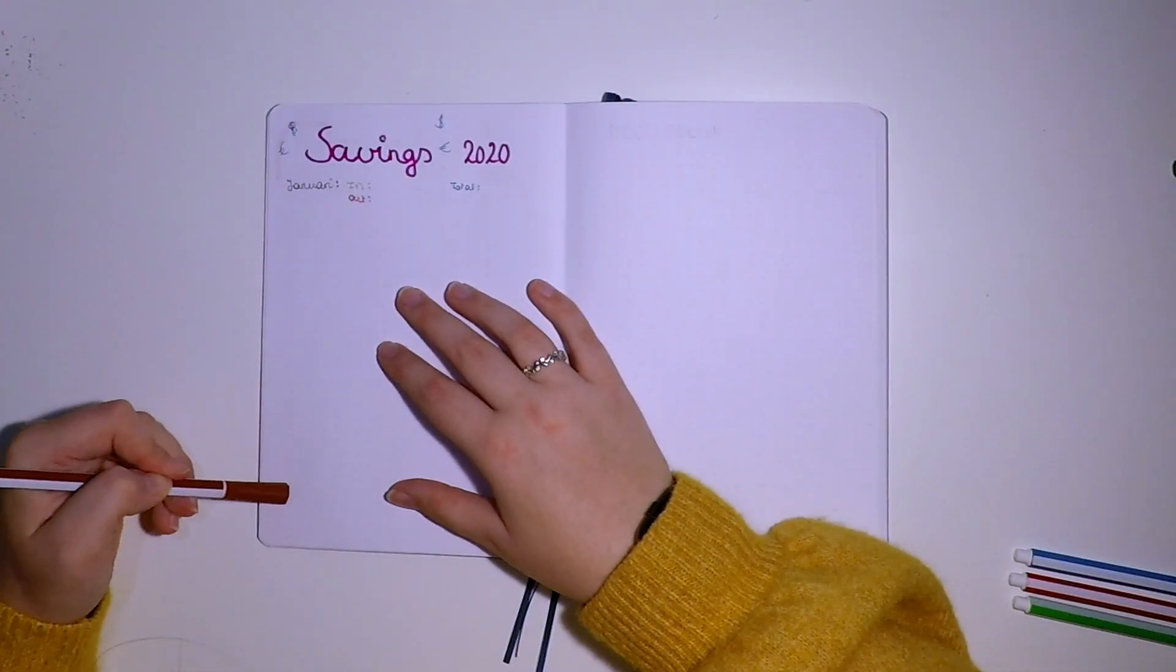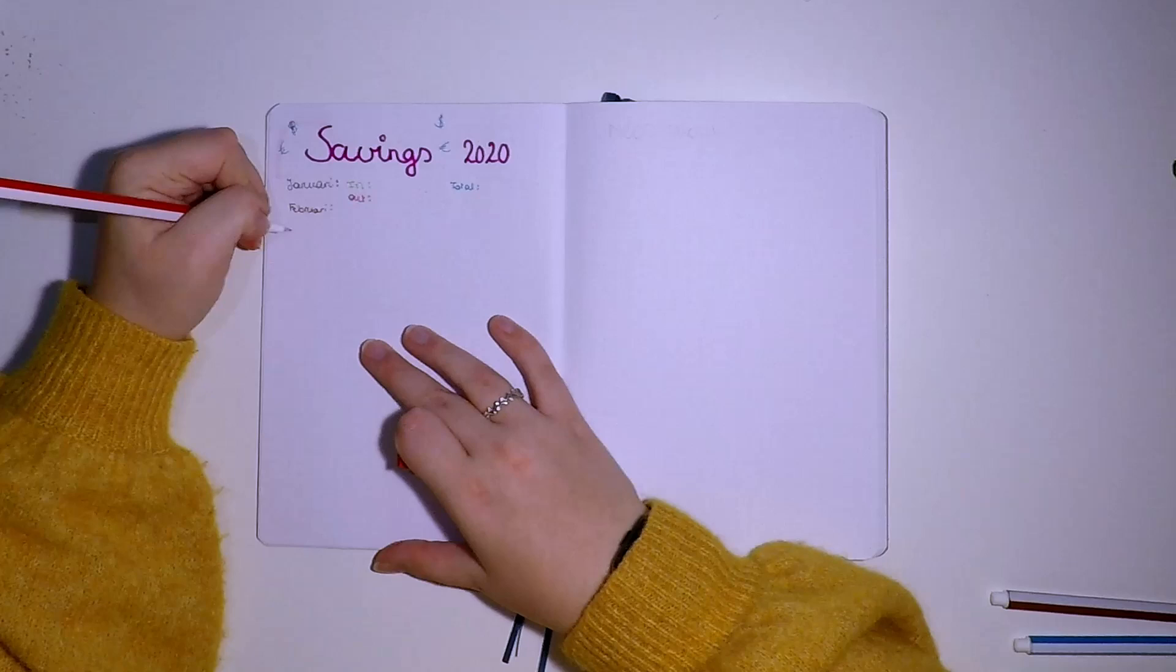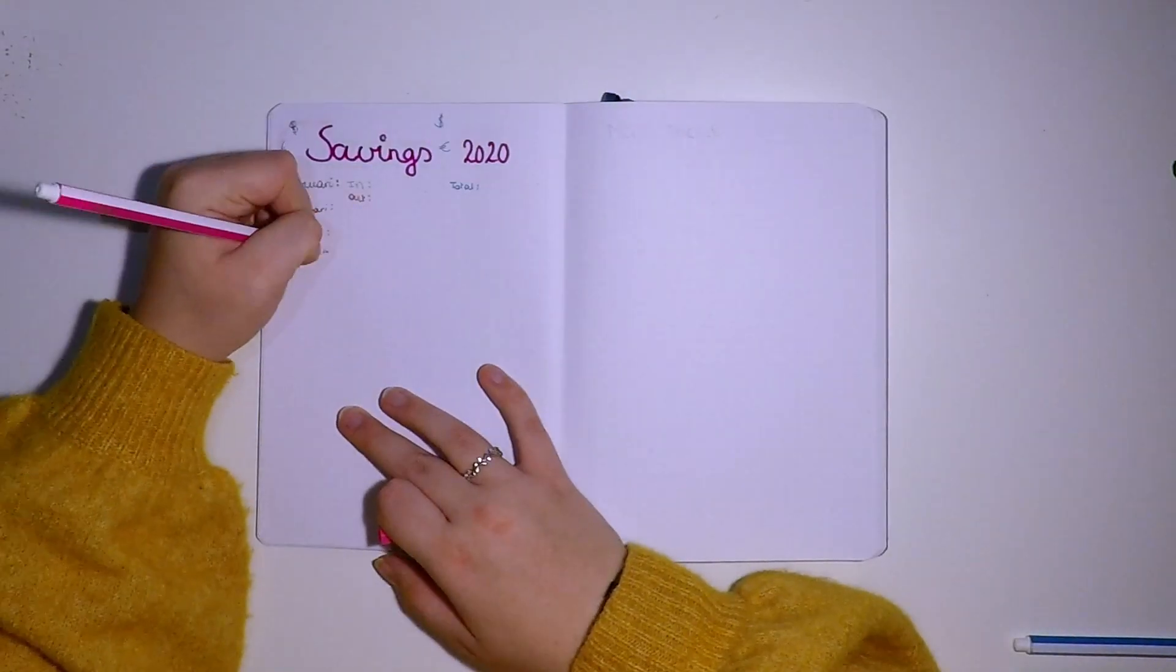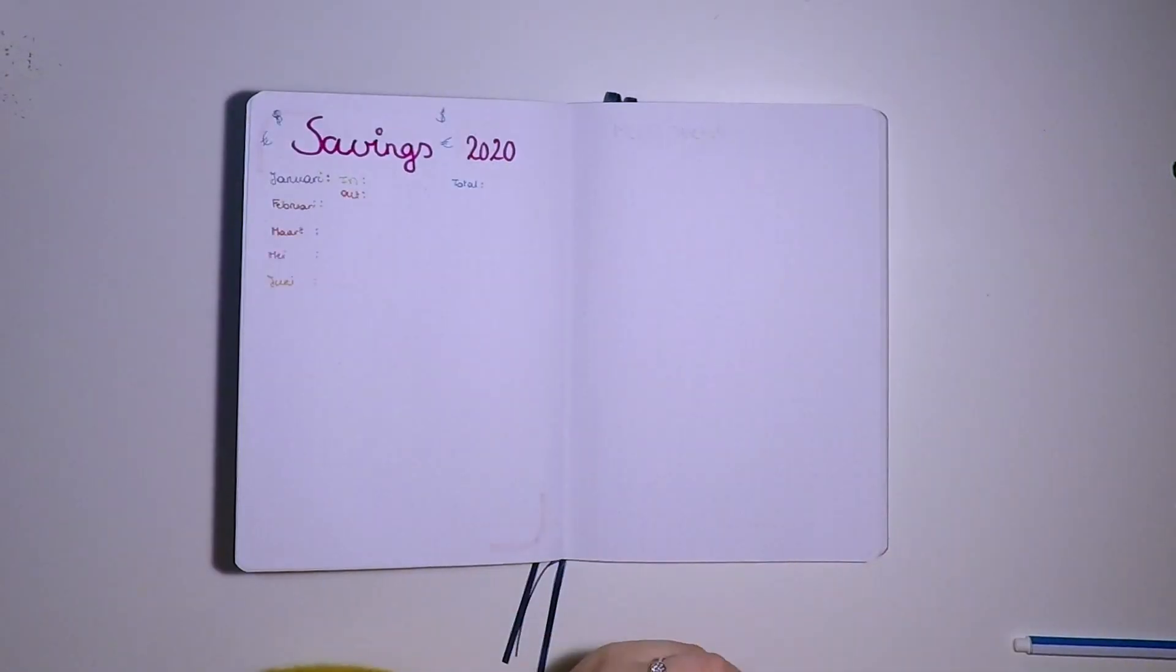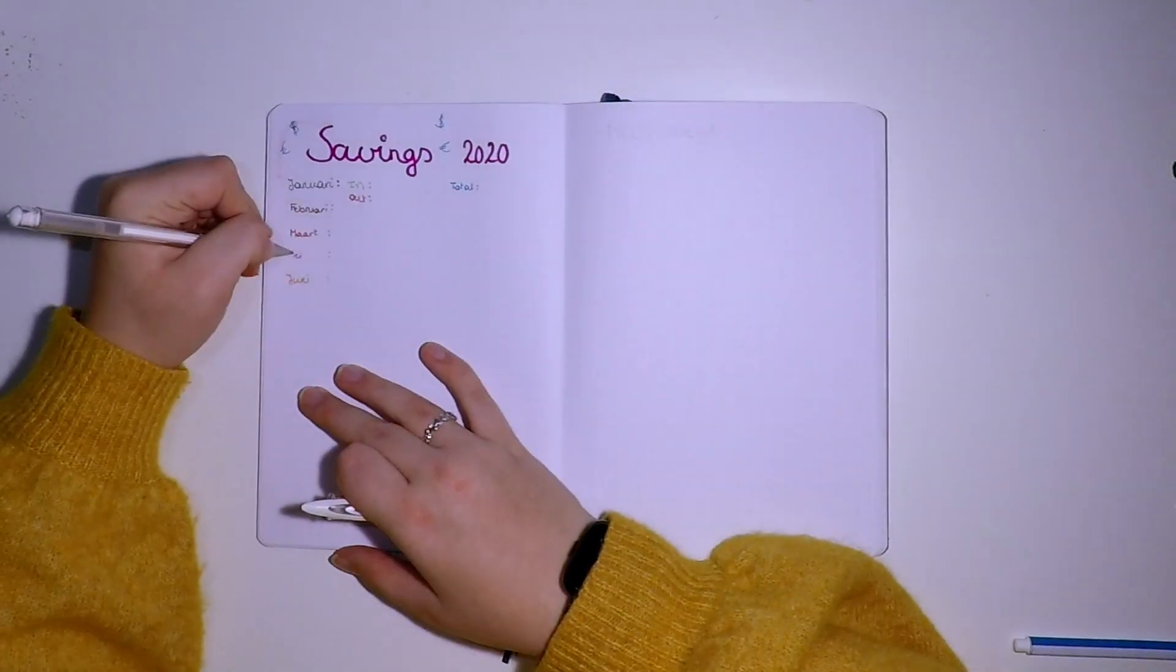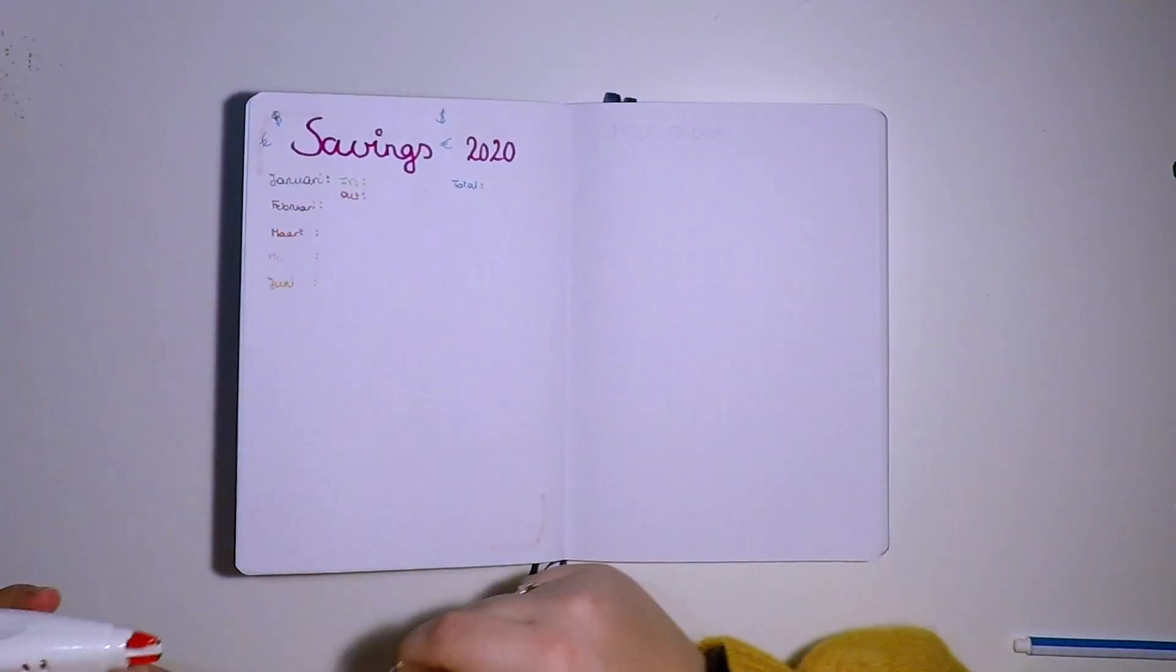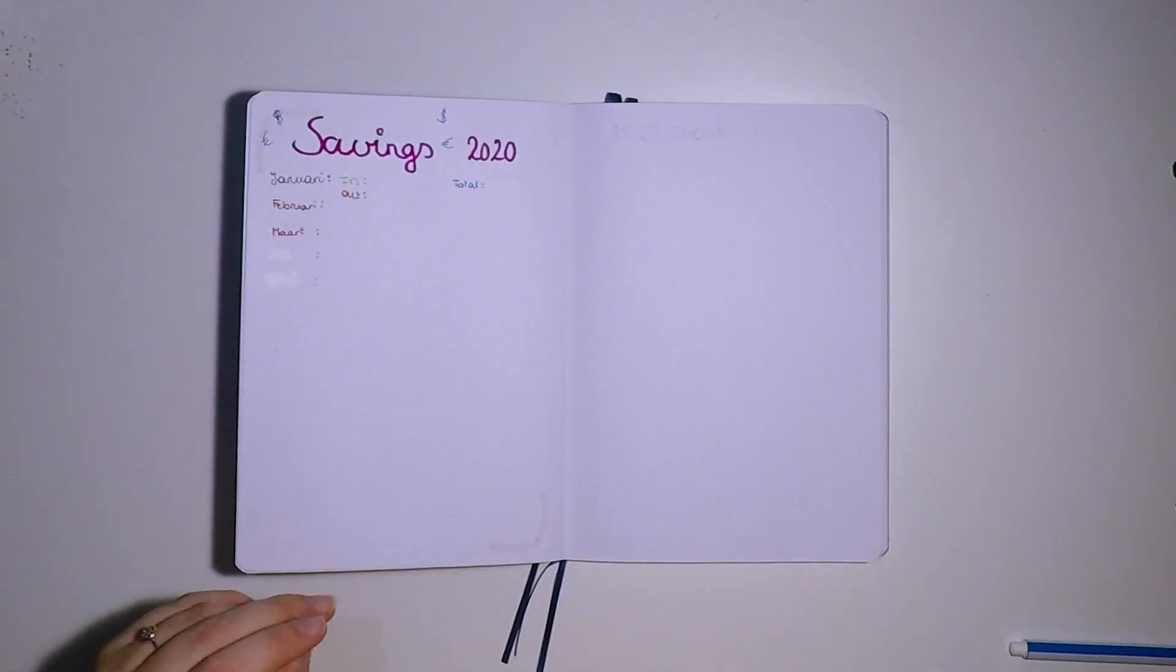And I'm going to write months a lot in this video. If you're wondering why you recognize some of them and some not, it's because I'm writing this in Dutch. Because I speak Dutch and I'm not going to do this in English.